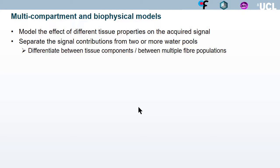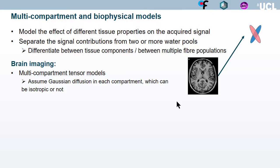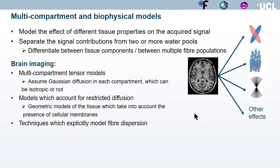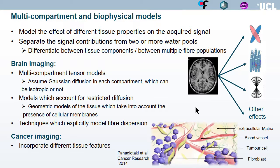A different way of modeling the diffusion signal is to use multicompartment and biophysical models to try to be more specific. We want to model the effect of different tissue properties on the acquired signal and separate the signal contributions from two or more water pools, in order to differentiate between different tissue components as well as between multiple fiber populations. For brain imaging, we can look at multicompartment tensor models, models which account for restricted diffusion, techniques that explicitly account for fiber dispersion, and also recent developments for cancer applications.